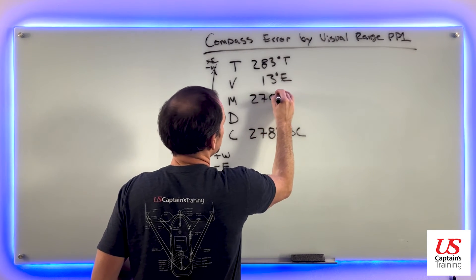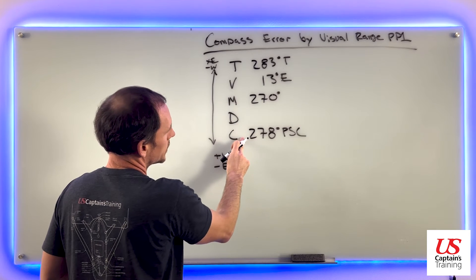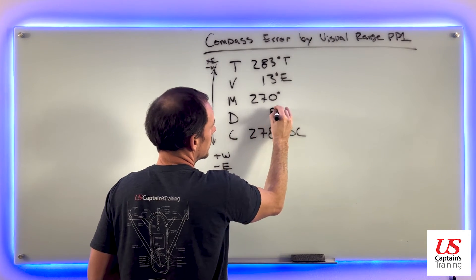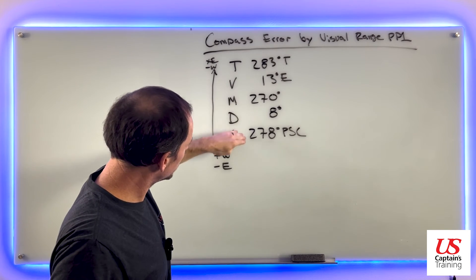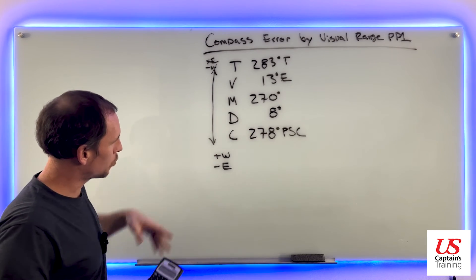Now to get from 270 to 278, there's eight degrees in there. We added, right? From 270 down to 278, we need to add these eight, which means it's west.